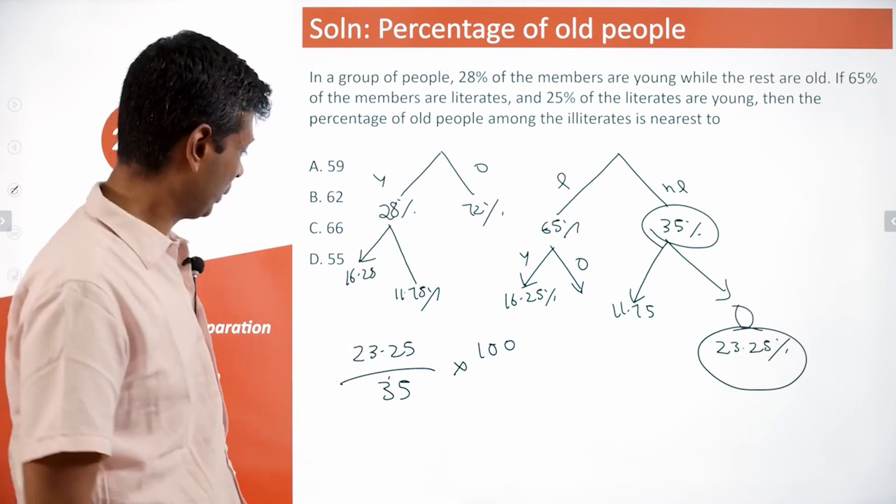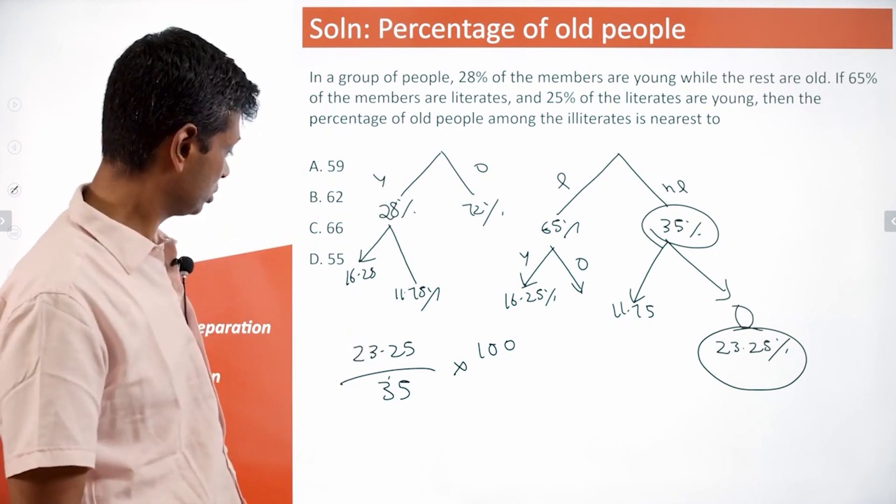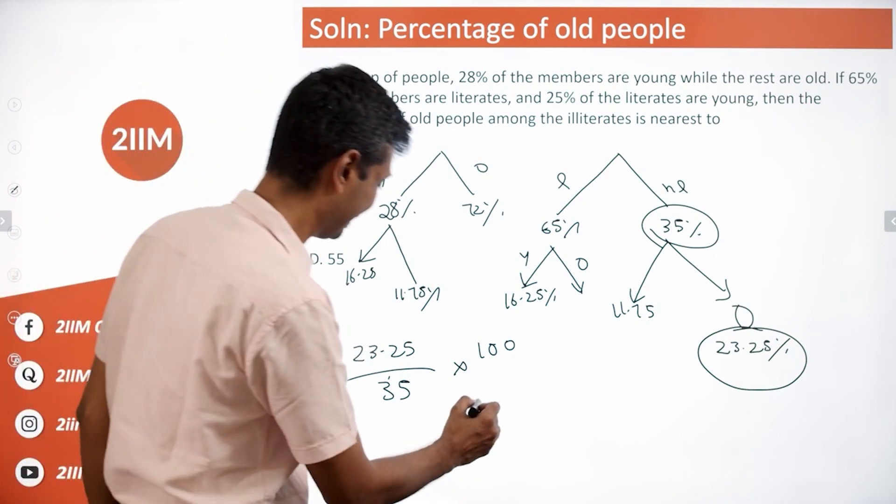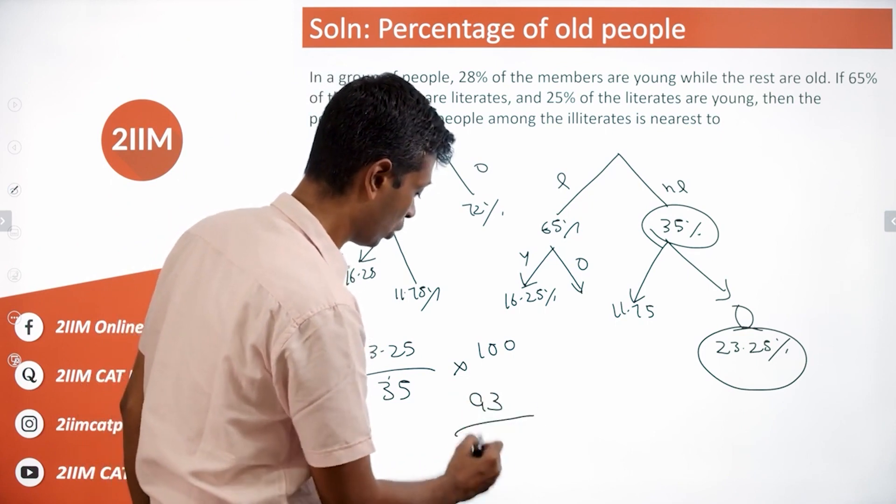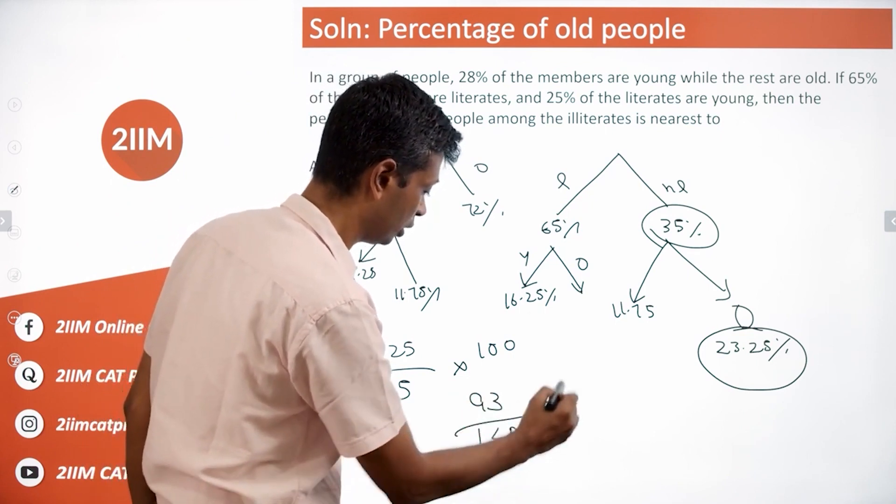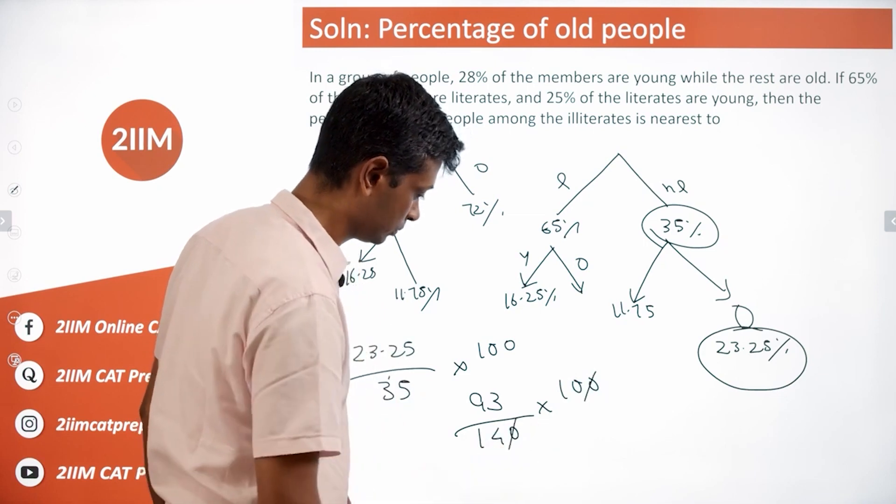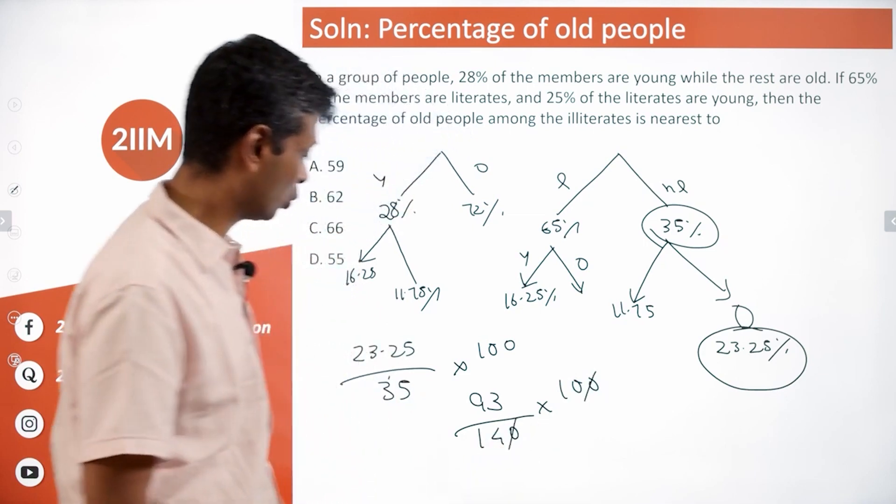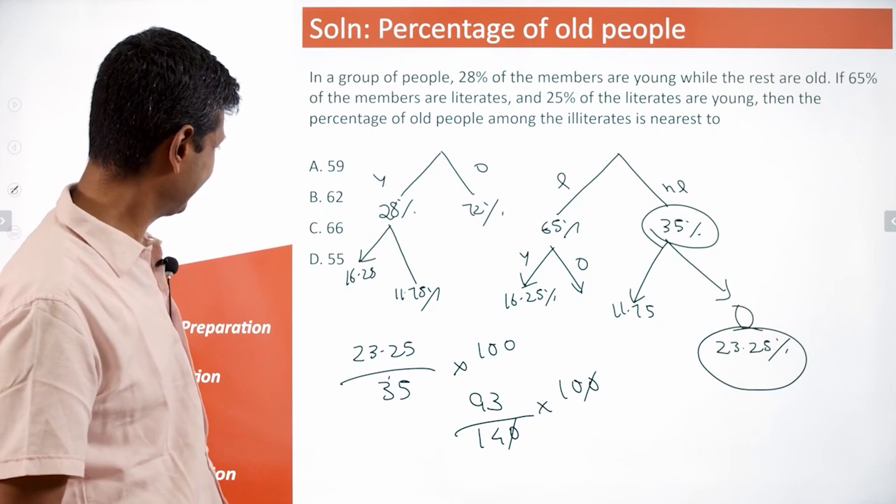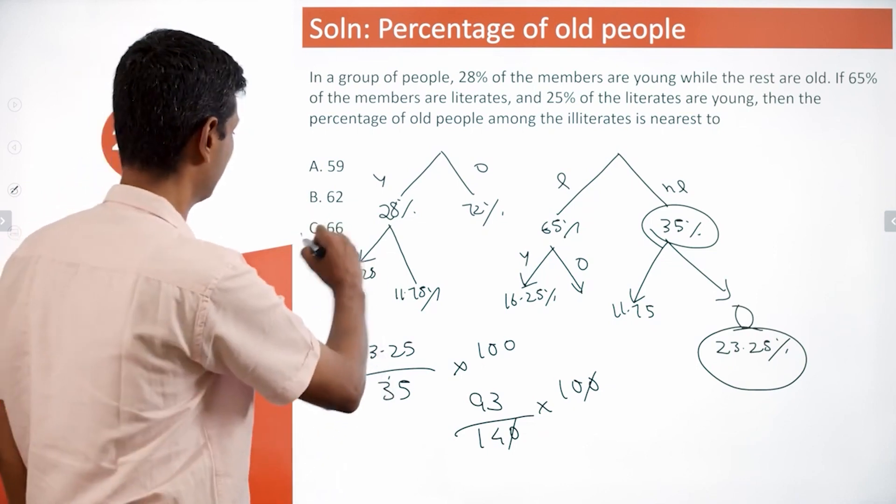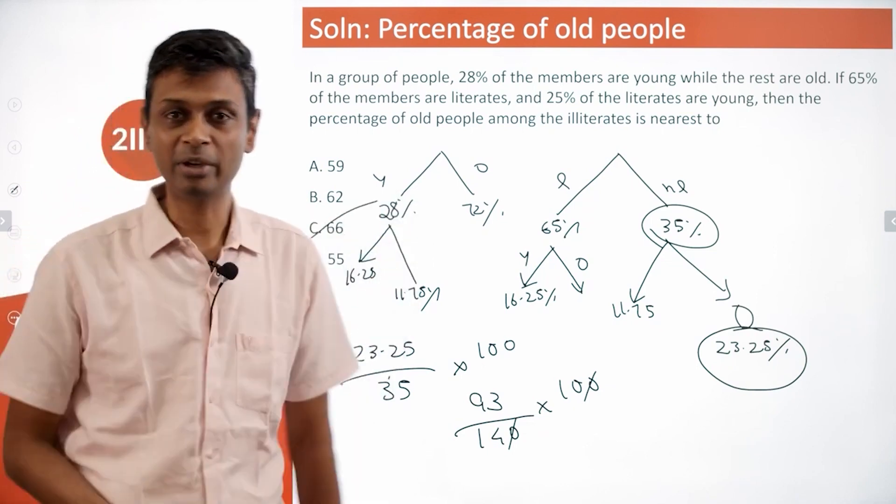23.25 times 4 is 93, so 93 by 14 times 100. 930 by 14 is 66. I'm checking - 930 by 14 should be 66 point something. That's the answer we're looking for.